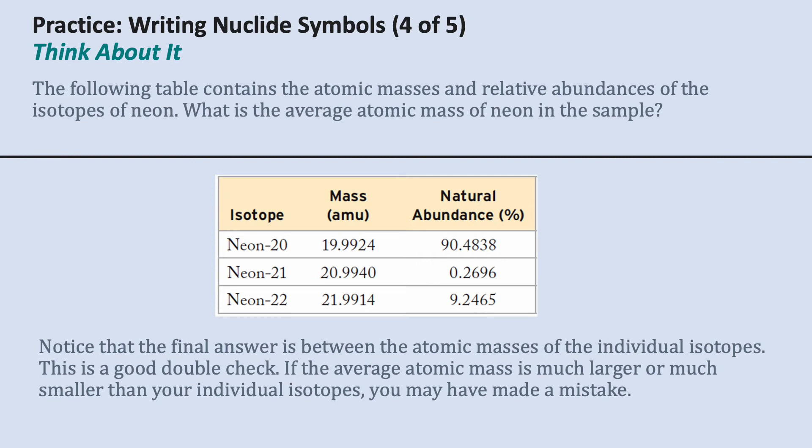which had the highest abundance, but because there were two heavier isotopes that did have a contributing percent natural abundance, it is a little bit heavier.